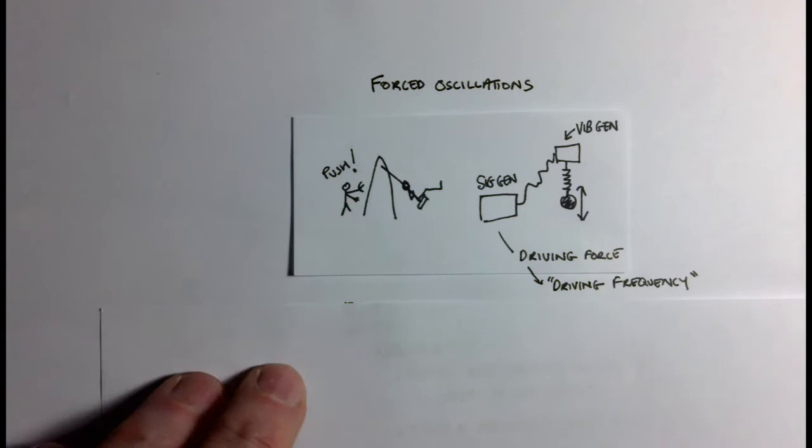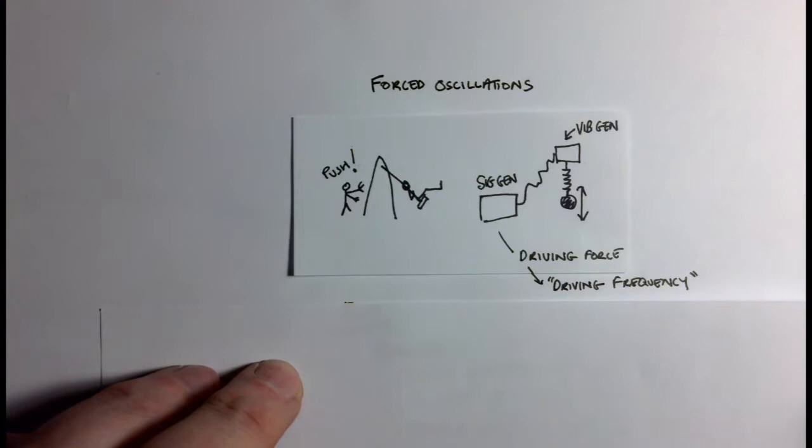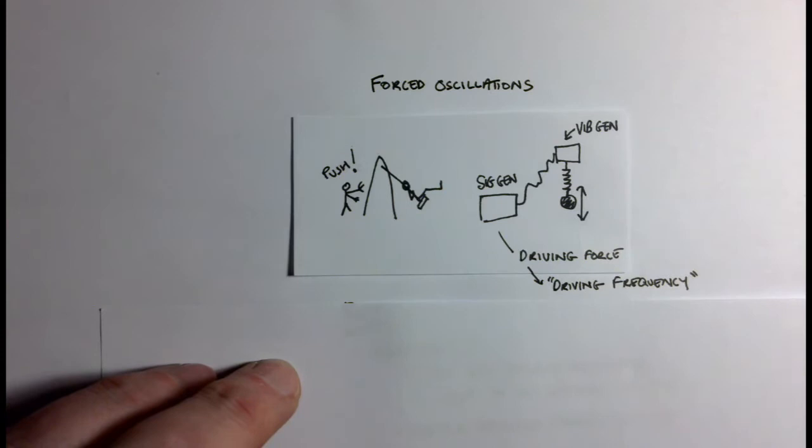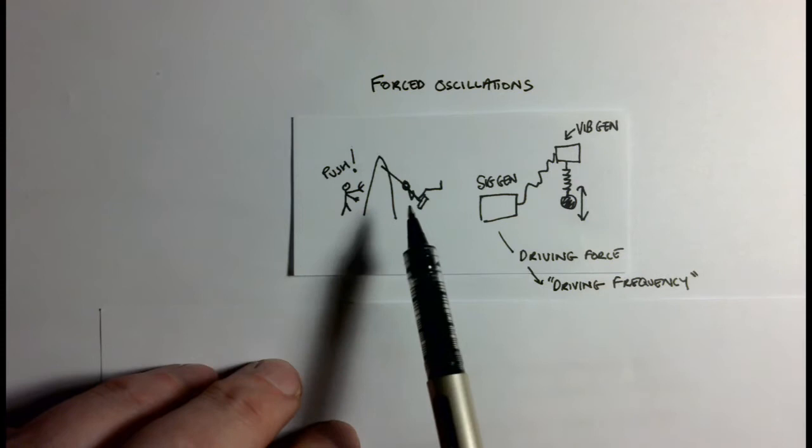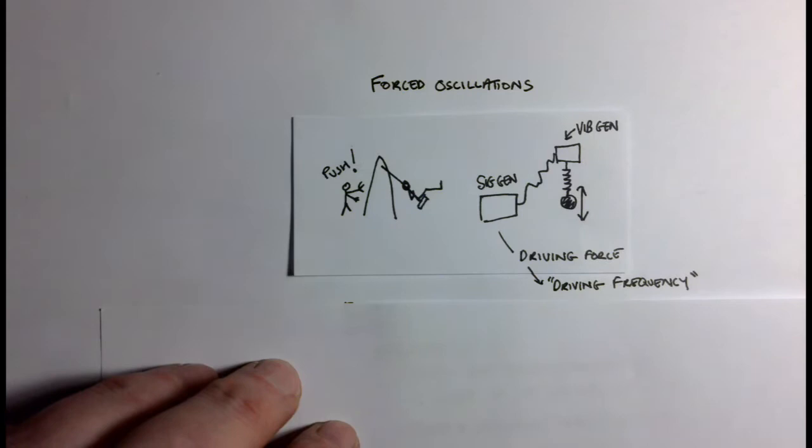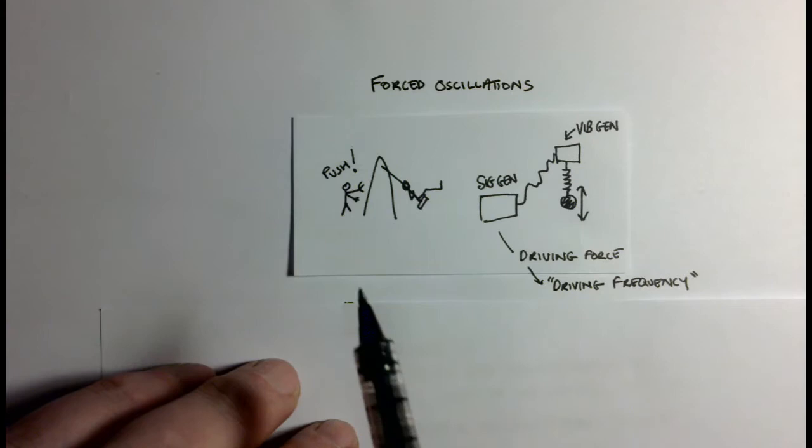Following on from free oscillations, we can have forced oscillations. This is where you're adding energy into the system, and this will affect either the frequency of the oscillation or the size of the oscillation. The first example might be, rather than someone being allowed to swing freely on a swing, someone comes along to push them exactly at the right time to get large amplitude swings.